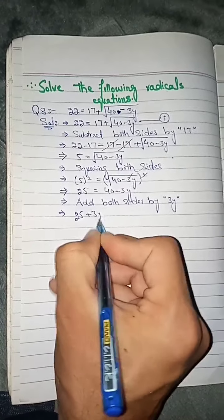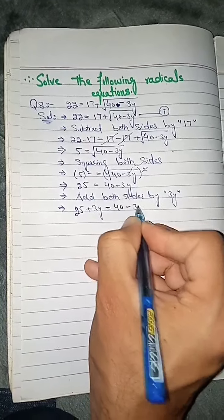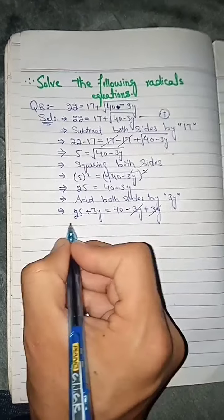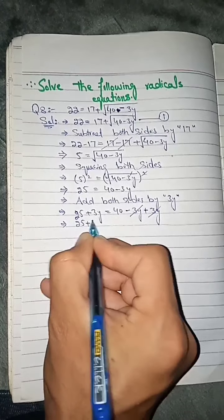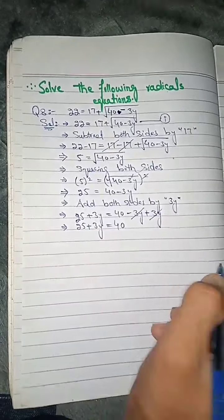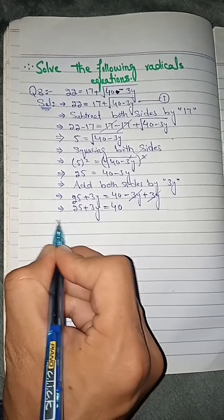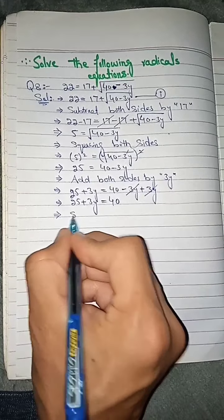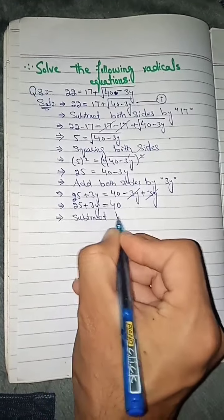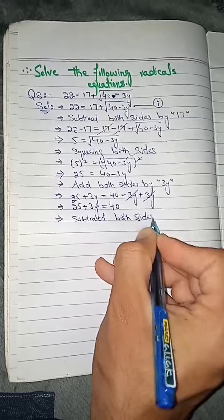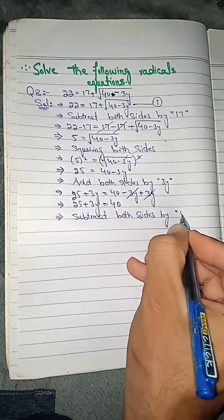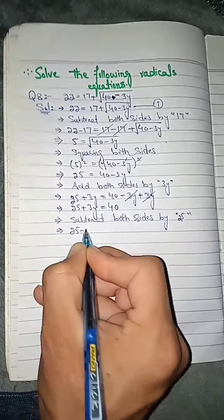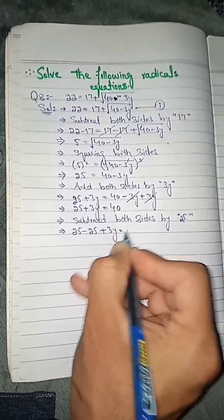25 plus 3y is equal to 40 minus 3y plus 3y. So 25 plus 3y equals 40. Then subtracting 25 from both sides gives 3y equals 15.